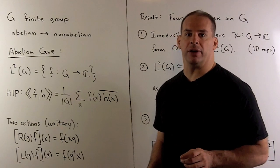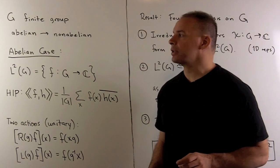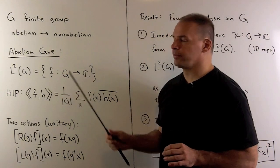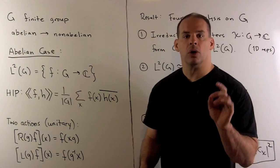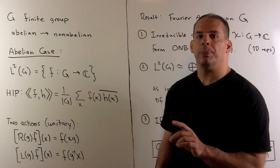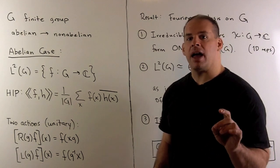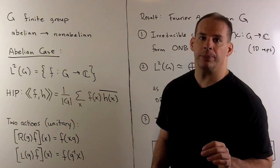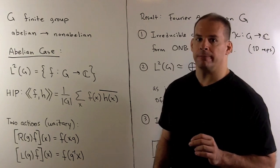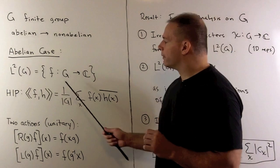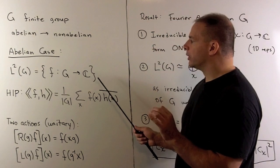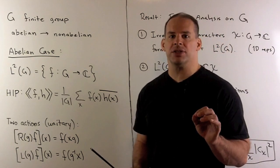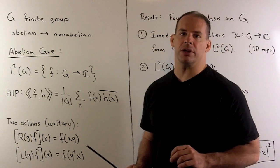Continuing with the representation theory of finite groups, we move from the abelian case to the non-abelian case. Recall, our goal is to describe an analog of Fourier analysis on the circle group. We'll have two main themes. First, for functions on our finite group, we want to use the irreducible unitary representations to get a version of Fourier series.